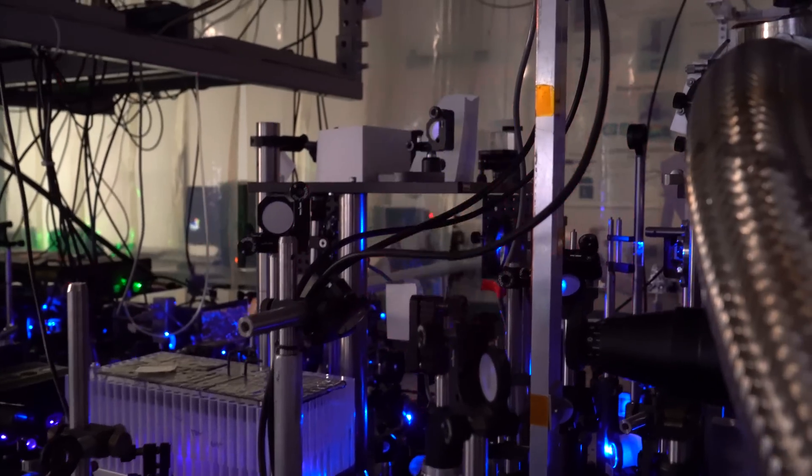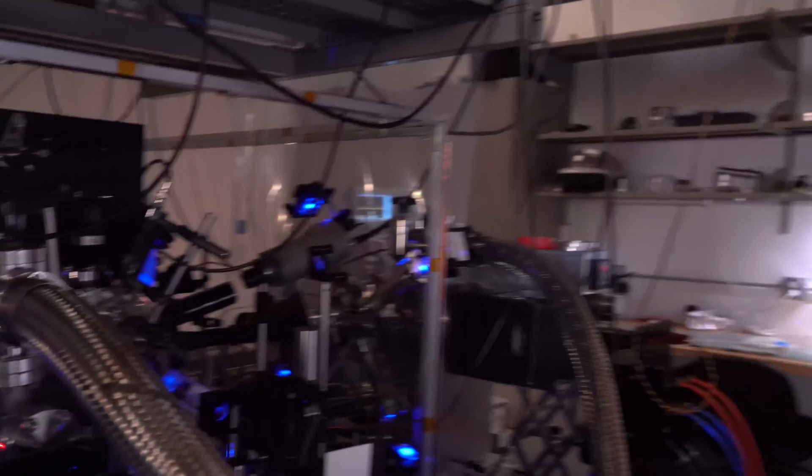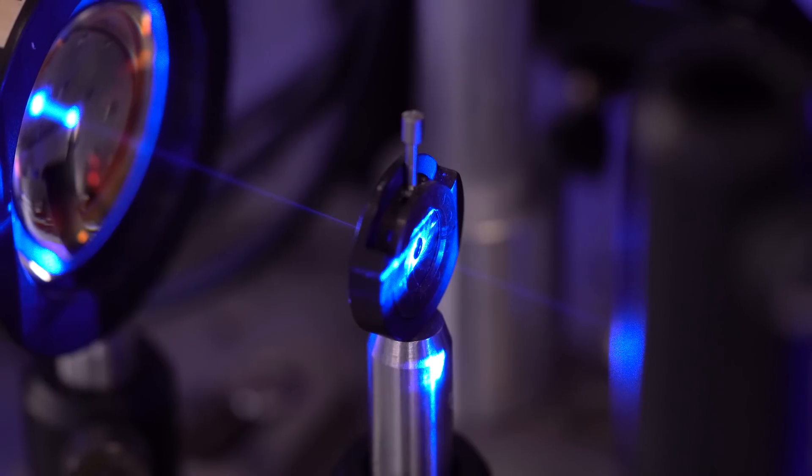After photo ionization, we wind up with what you can basically call a soup of ions and electrons, very similar to the Sun. We have a soup of ions that are positively charged and electrons that are negatively charged.